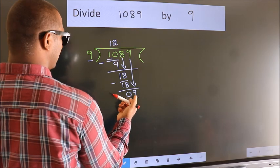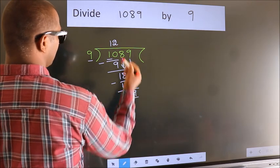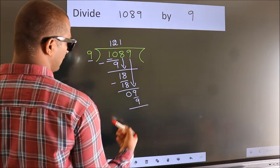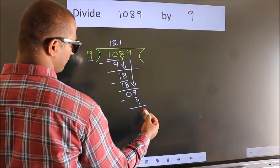When do we get 9? In the 9 table, 9 once 9. Now we subtract. We get 0.